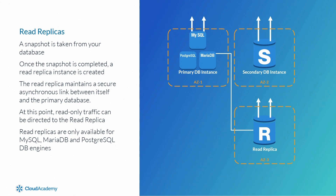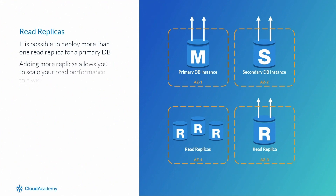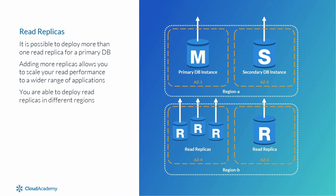Be aware that read replicas are only available for MySQL, MariaDB, and Postgres database engines — though it is always best to consult the AWS documentation as this can change over time. It is possible to deploy more than one read replica for a primary database. Adding more than one read replica allows you to scale your read performance to a wider range of tools and applications. It is also possible to deploy a read replica in a different region, which significantly helps to enhance your DR capabilities.